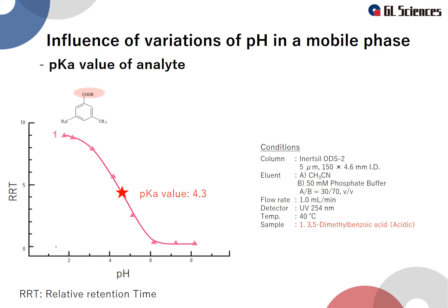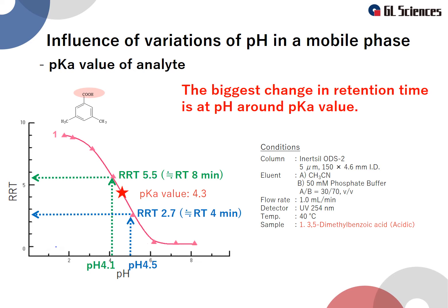Dimethylbenzoic acid is an acidic compound with a pKa of 4.3. As shown here, the retention time is longer under lower pH conditions. The biggest change in retention time happens when using a pH around the pKa value. In this example, when the pH is nearby the pKa value, the retention time differs by 4 minutes within a pH difference of only 0.4. This means that the retention time is not stable when the mobile phase pH is set near the pKa of the analyte.